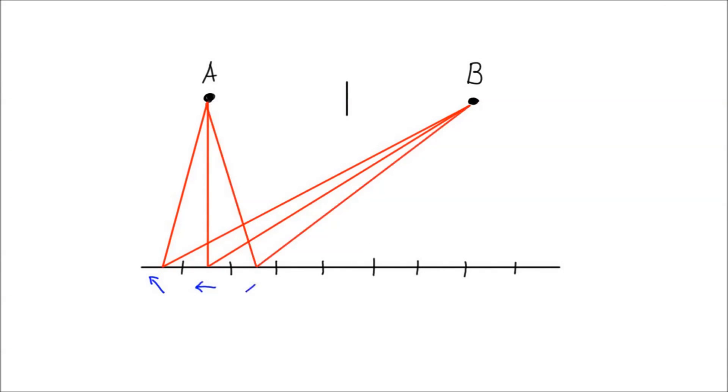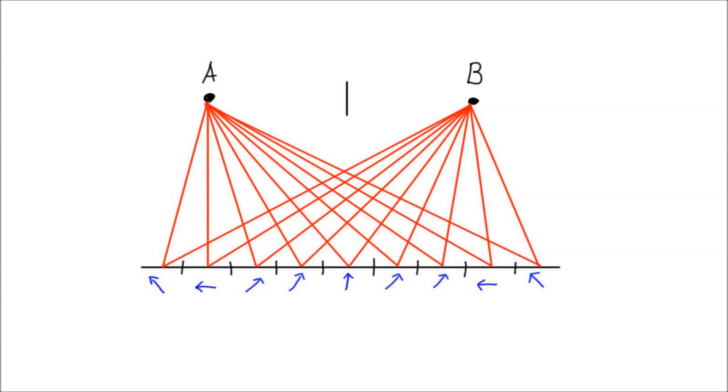We can keep drawing arrows for each possible path, like this, noticing that around the center of the mirror, the path length changes very little, and thus the arrows turn less than at the edges.